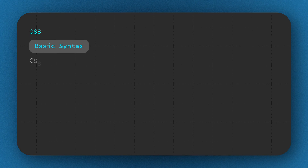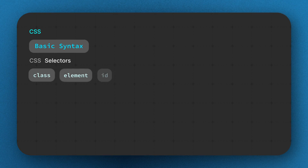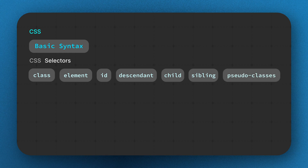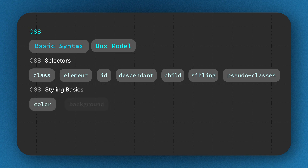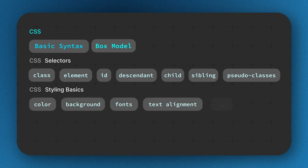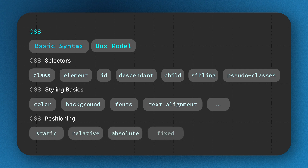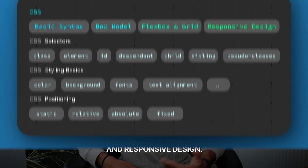In CSS you should learn at least the basic syntax; selectors like class, element, id, descendants, child, sibling, and pseudo-classes; the box model, which is pretty important; styling basics like color, background, fonts, and text alignment; positioning — static, relative, absolute, and fixed. It would also be good to know some flexbox, grid, and responsive design.